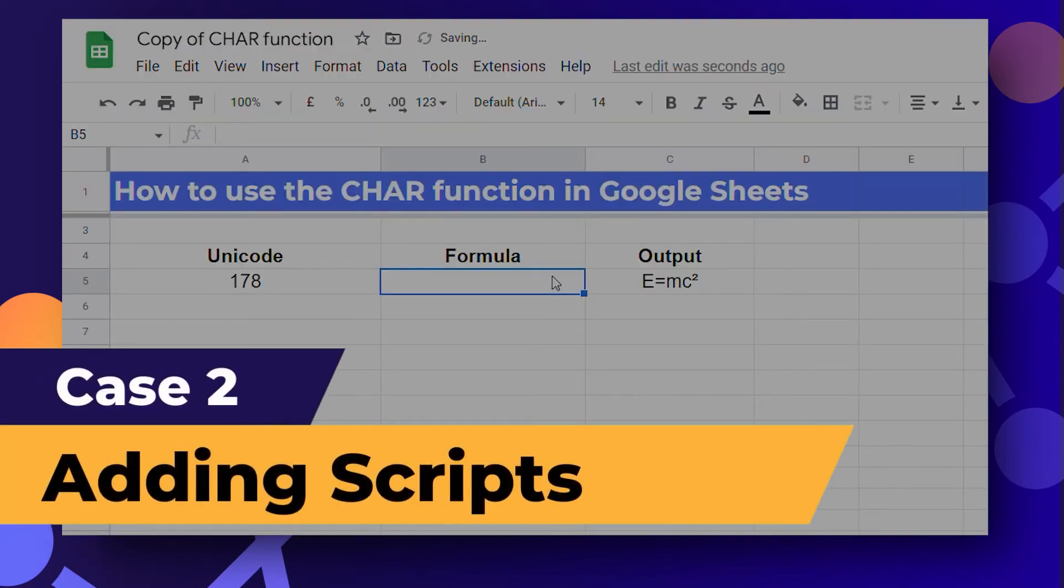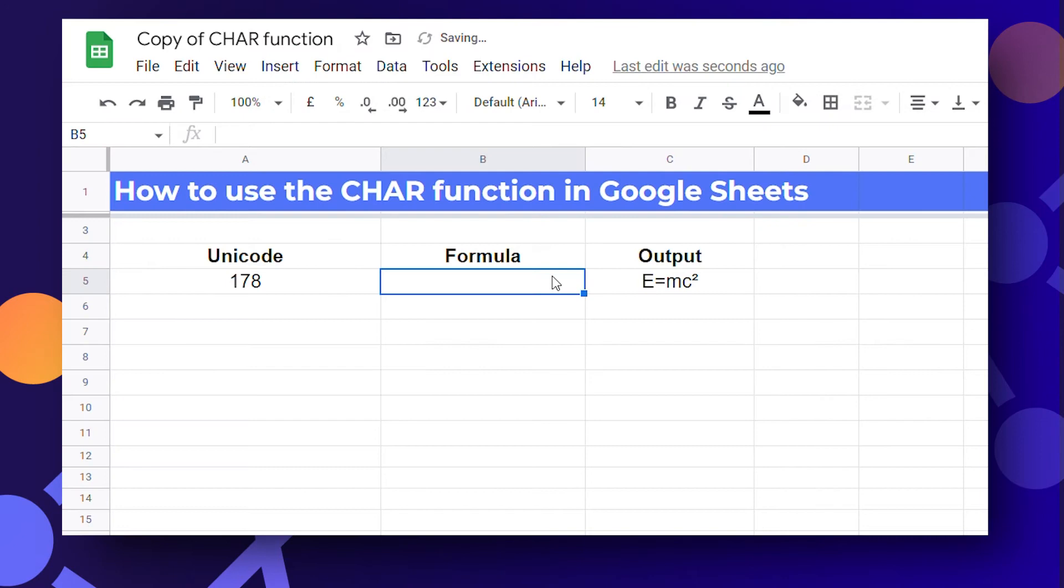Now the next use case is adding subscript and superscript. Let's assume we need to write Einstein's energy mass equation E equals mc square in our table. To do so we find the unicode value for the power of 2 which is 178. Then type in the formula.